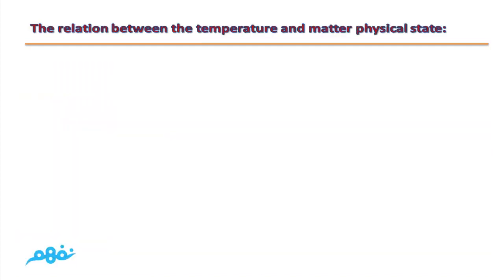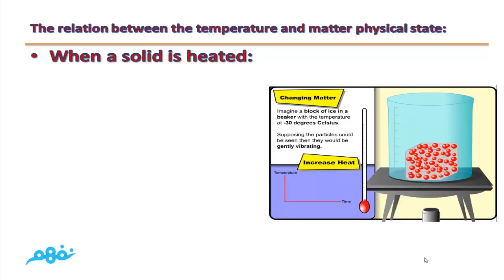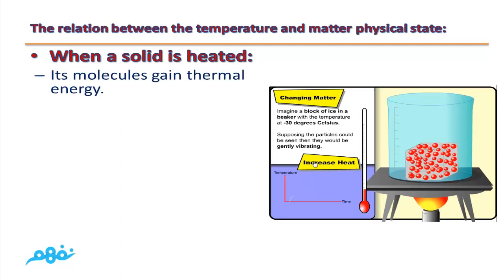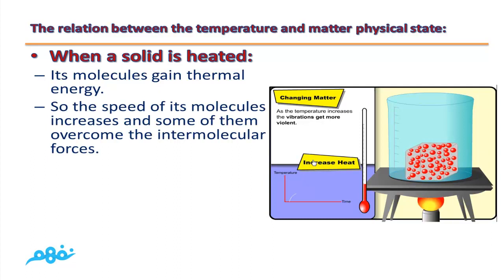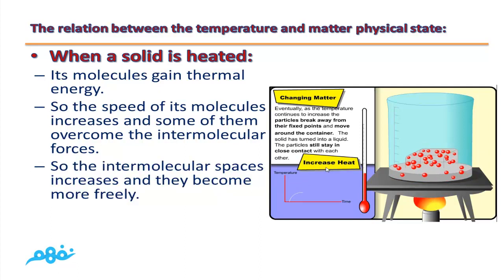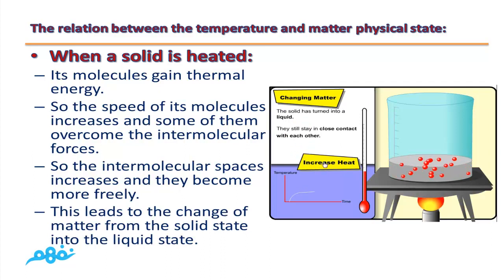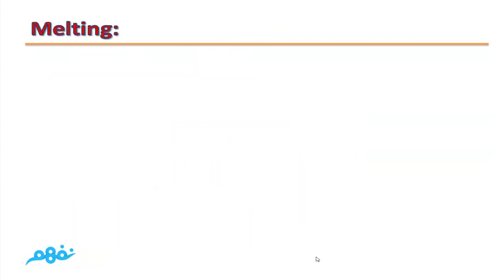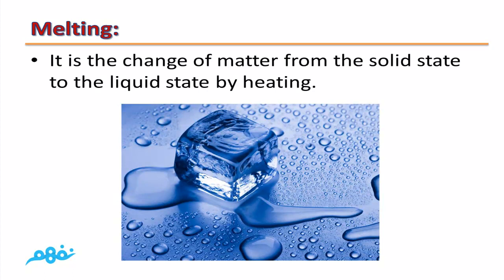What is the relation between temperature and the physical state of matter? Can we change from one state to another? Yes, this can be done by heating or by cooling. When a solid is heated, its molecules gain thermal energy, so the spaces increase and some molecules overcome the intermolecular forces. The intermolecular spaces increase and they become more free, leading to the change from solid state to liquid state. What is meant by melting? It is the change of matter from the solid state to the liquid state by heating.